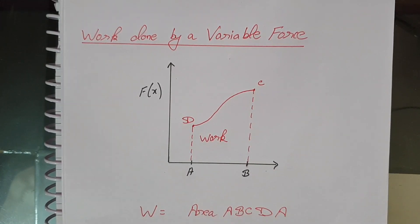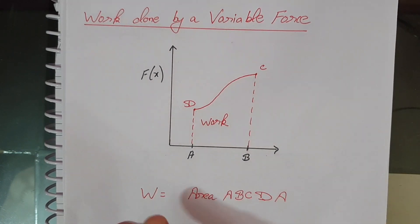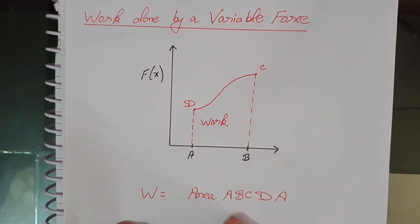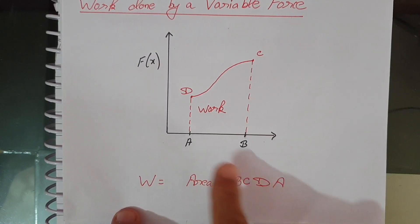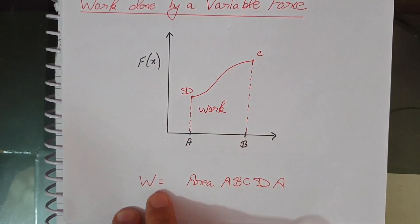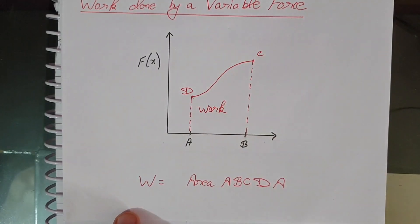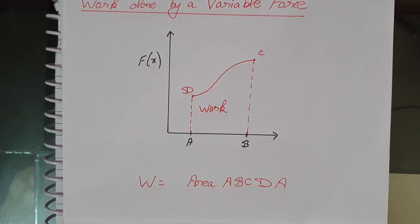Now to calculate the work done under this variable force, W is equal to the area under the region A-B-C-D-A, meaning the work done will be the area under this graph. Hence, work done by a variable force is numerically equal to the area under the force curve and the displacement axis.